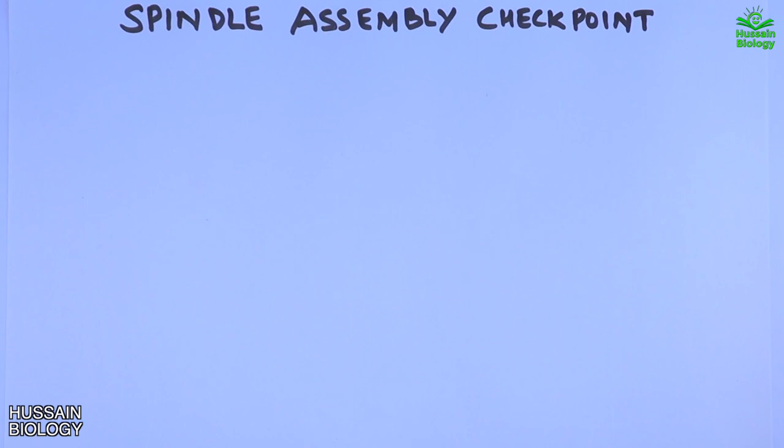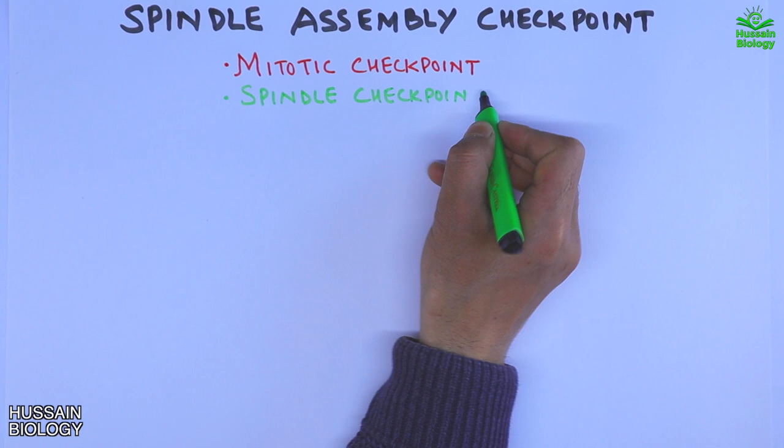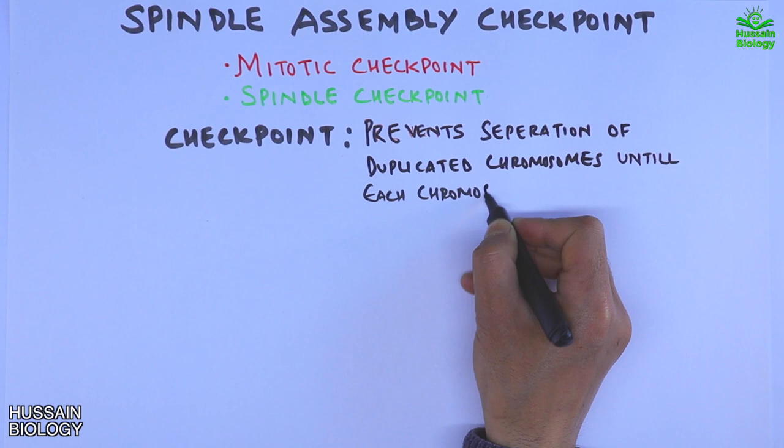In the previous video of the cell cycle series we discussed about the M phase, and now in this video we'll be discussing about the spindle assembly checkpoint, that's SAC. It's also known as the mitotic checkpoint or spindle checkpoint, because this checkpoint prevents separation of duplicated chromosomes until each chromosome is properly attached to the spindle.